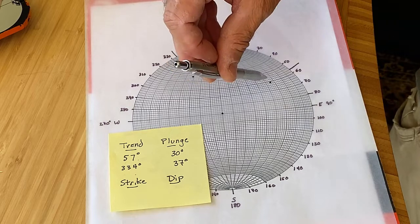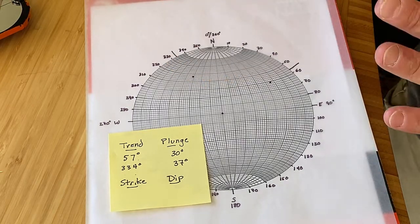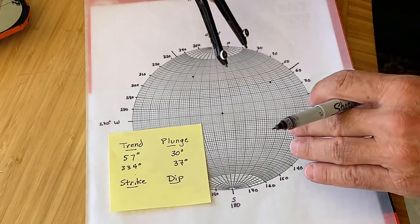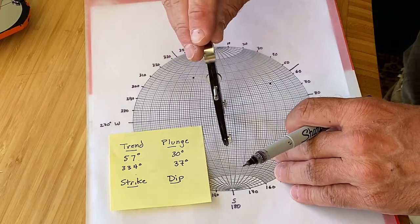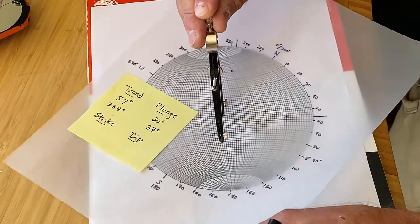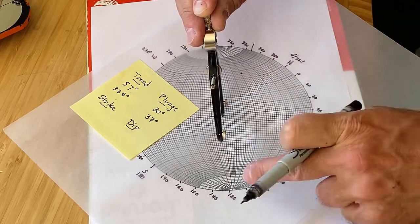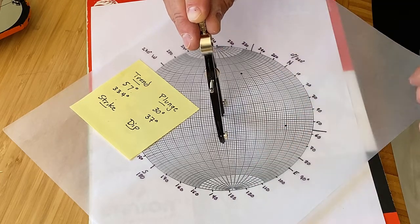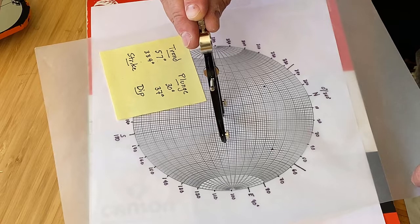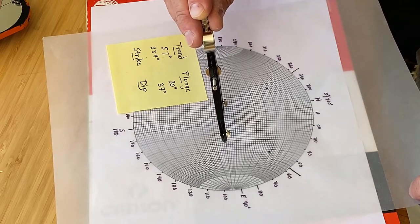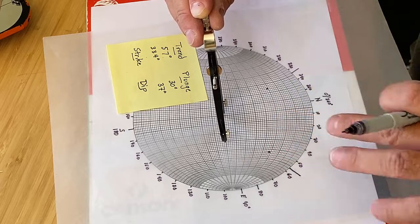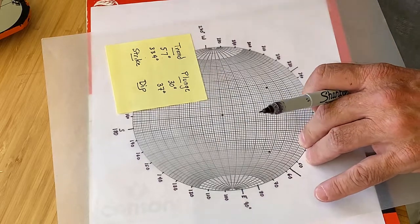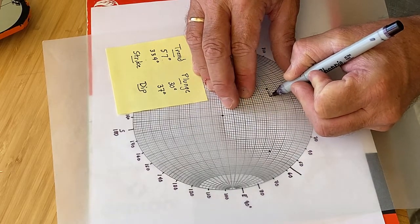And they have to lie on the plane that is a true strike and dip. And so to figure out what the true strike and dip is, we rotate this around until these two points lie on the same great circle. And the great circle are these heavy lines that run between north and south. And so we can rotate this around looking for the point at which they are sitting right next to—in this case—this heavy line here, which is about 40 degrees. And so that is defining our great circle, and we can just now trace that through.